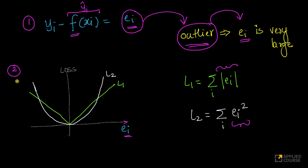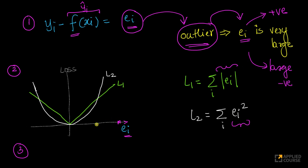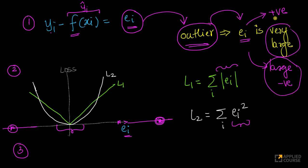The third key step: imagine if ei is very large — either a large positive value or a large negative value. Most non-outlier points will have a small error ei, so they lie near the center. But outliers will have a large positive or large negative value, meaning they lie in the very far-away regions of the error axis. Now notice: if the error is large, your L2 is growing quadratically — very, very fast compared to L1.